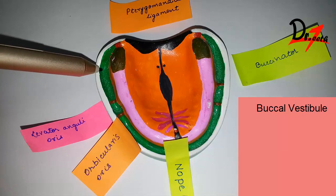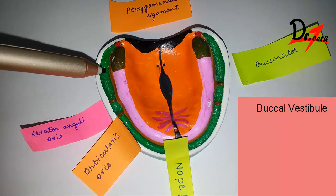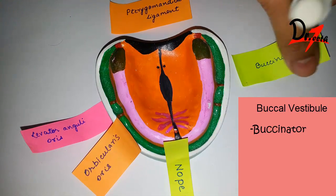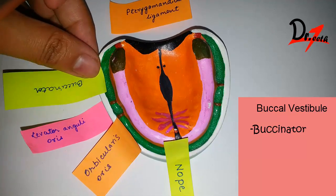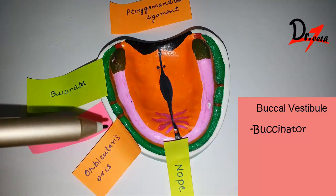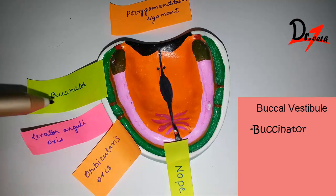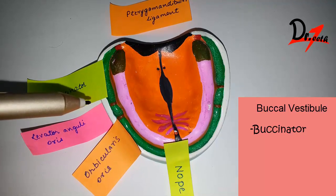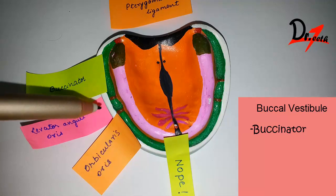Now we have the buccal vestibule. The depth of the buccal vestibule depends upon three things: first, the buccinator muscle — I'll place it here. The orbicularis oris muscle tries to pull the frenum forward because it is placed anteriorly, and the buccinator muscle is present posteriorly so it tries to pull the frenum backward. That is the action of these muscles on the frenum.